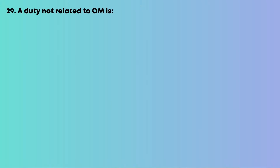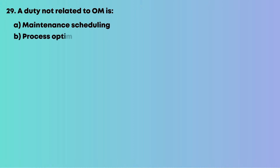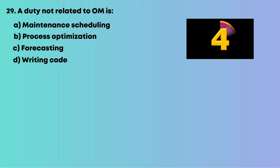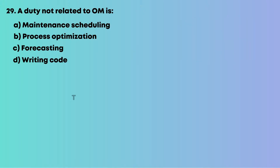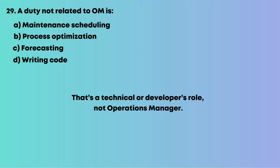Question 29: A duty not related to operations management is: A, maintenance scheduling; B, process optimization; C, forecasting; D, writing code. Writing code is a technical or developer's role, not an operations manager's. The right answer is D, writing code.